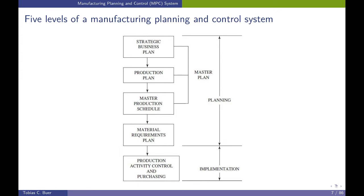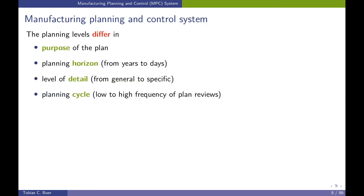This is not only the sequence of planning — what is more important is that decisions made in the strategic business plan build the framework for the production plan. In turn, the production plan follows the limits set by the strategic business plan, and its outcome limits flexibility in the master production schedule, and so on. The first three steps are often collectively referred to as the master plan. You can find additional explanations in the textbook.